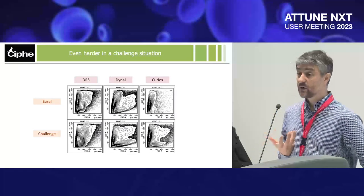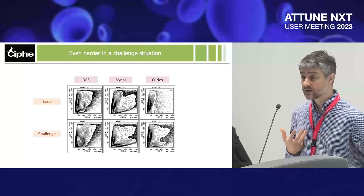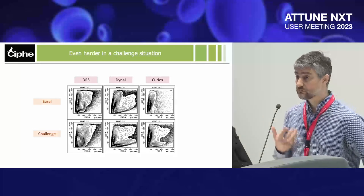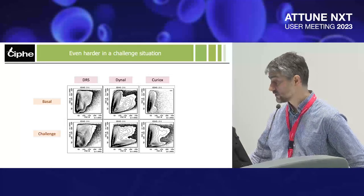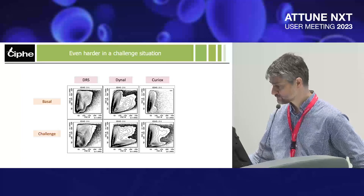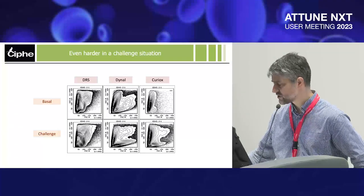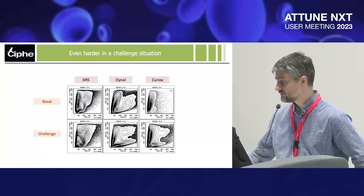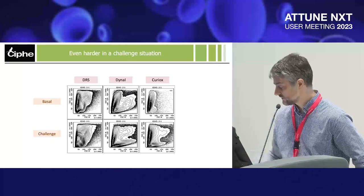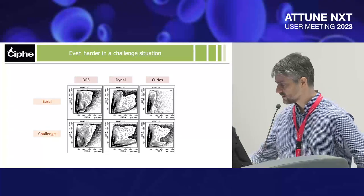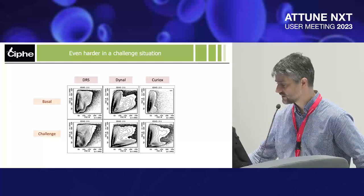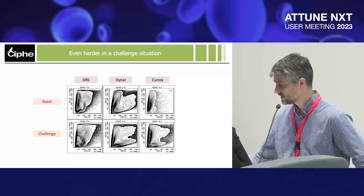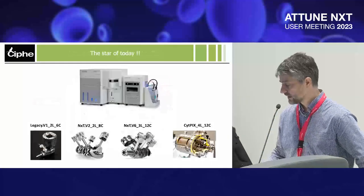We don't want to study the pancreas at basal state — we want to look at it in a challenge environment, which is even more of a mess. Because we don't know the sample in front of us — it's terra incognita — we really need to understand what we're doing to find the right cells. We tested several approaches to remove debris, but were never able to get rid of a particular cluster of particles. And actually, our cells of interest were residing right there.